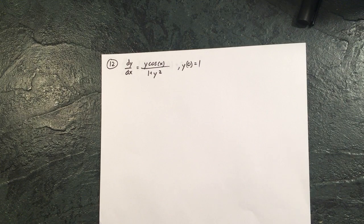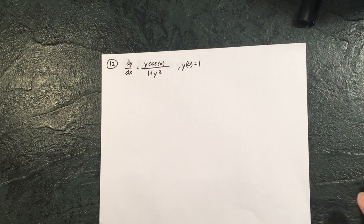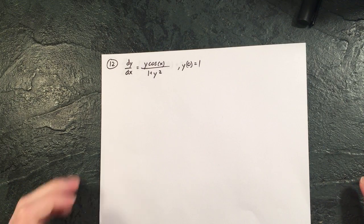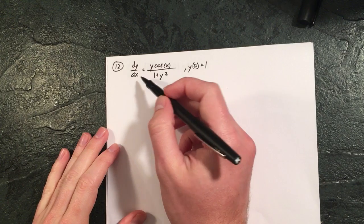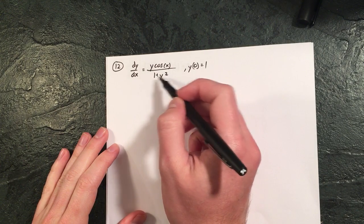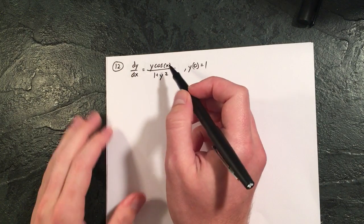If we're looking at 12 and 14, the hardest part on these is going to be separating the variables and getting it in the form we need correctly. So here I want the y's 1 plus y squared on the other side and dx on the other side.